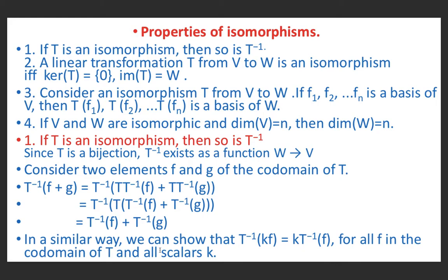Similarly, T⁻¹(kf) = k·T⁻¹(f) for all f in the co-domain of T and all scalars k. So T⁻¹ preserves scalar multiplication, meaning T⁻¹ is linear. We have already shown T⁻¹ exists, meaning T⁻¹ is one-one and onto. Therefore T⁻¹ is also an isomorphism.